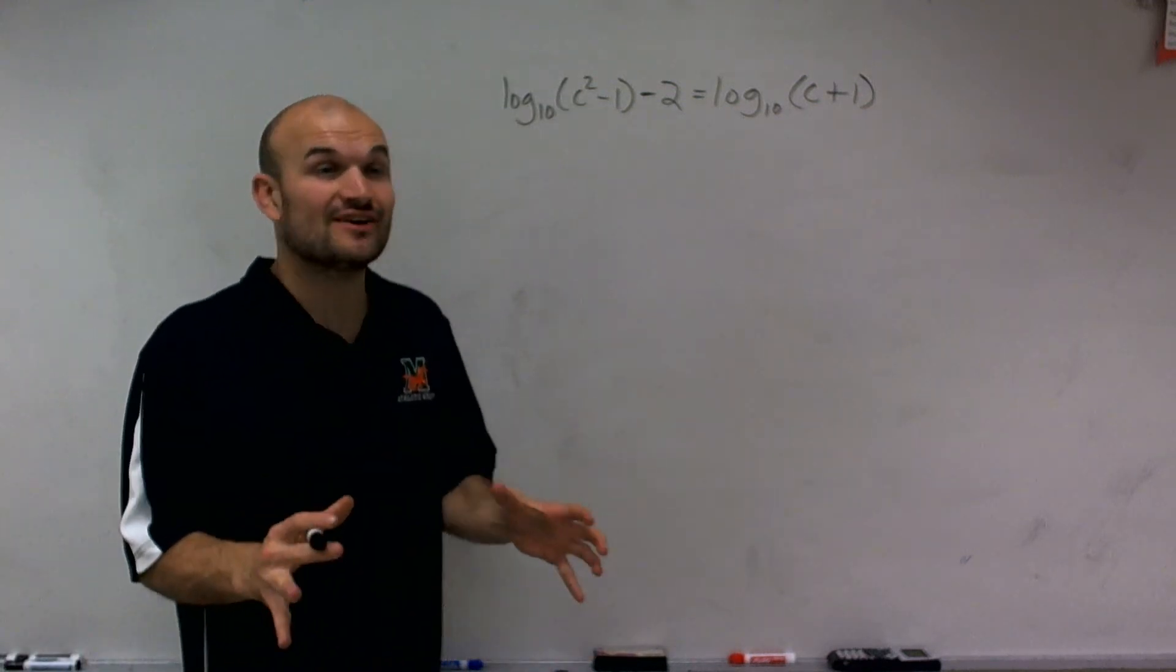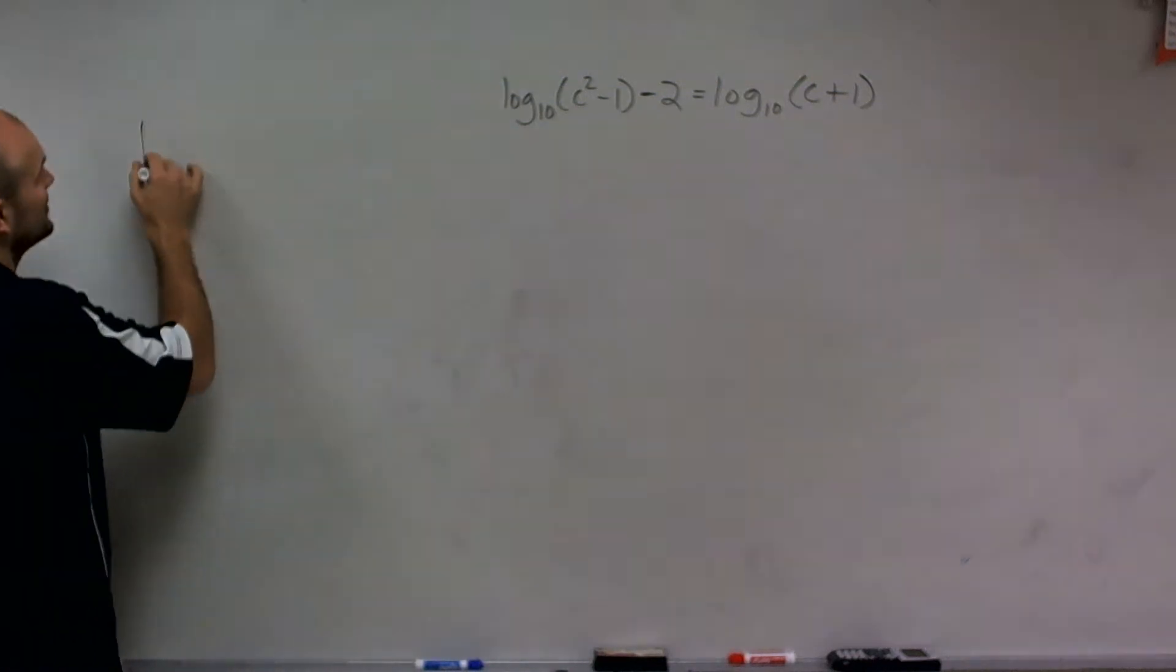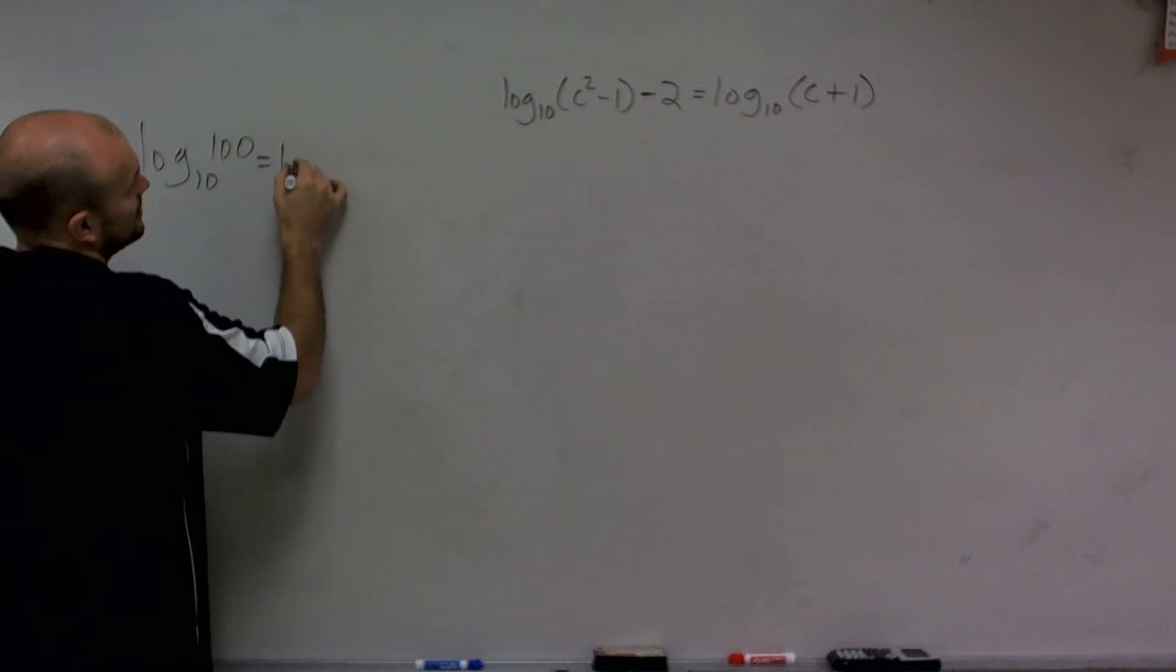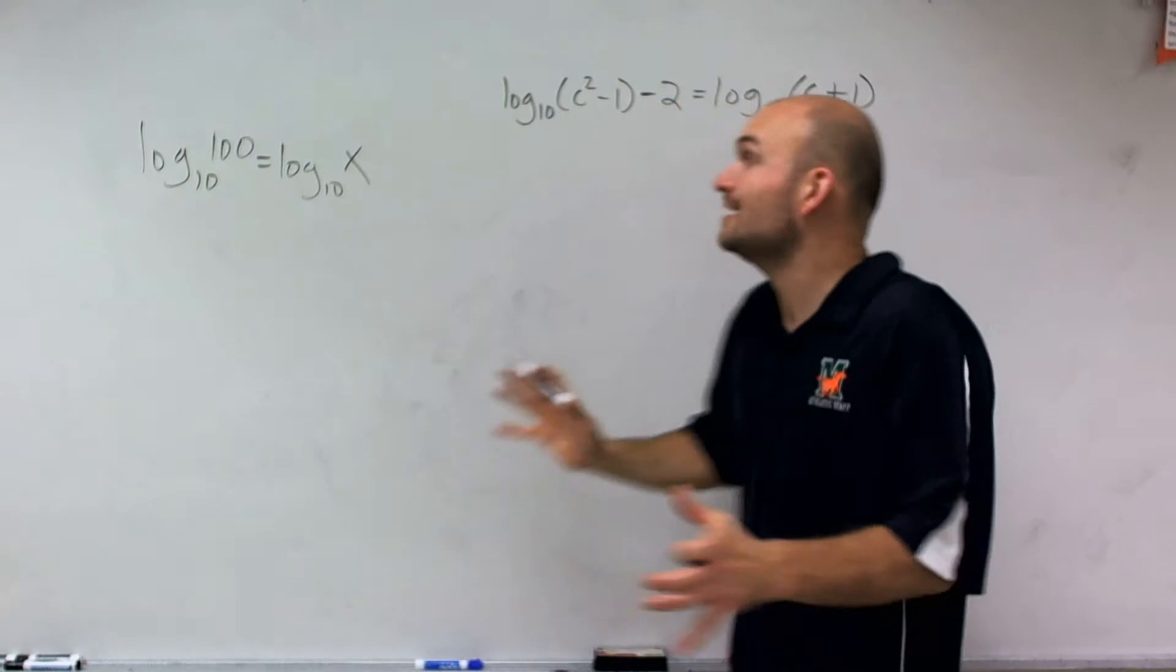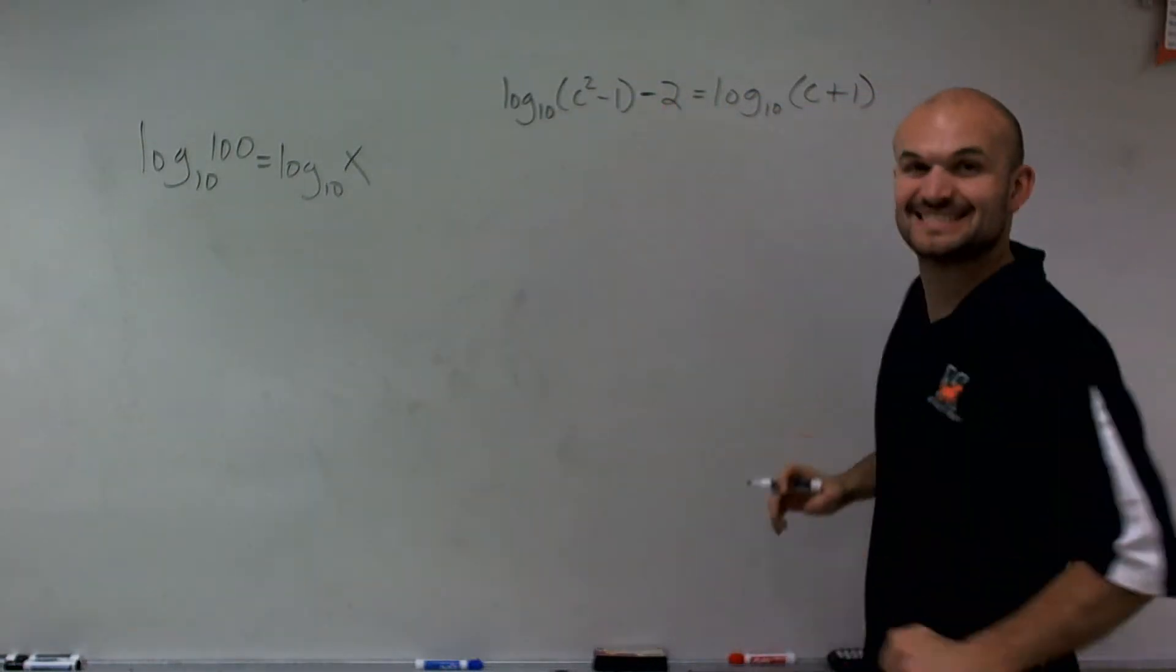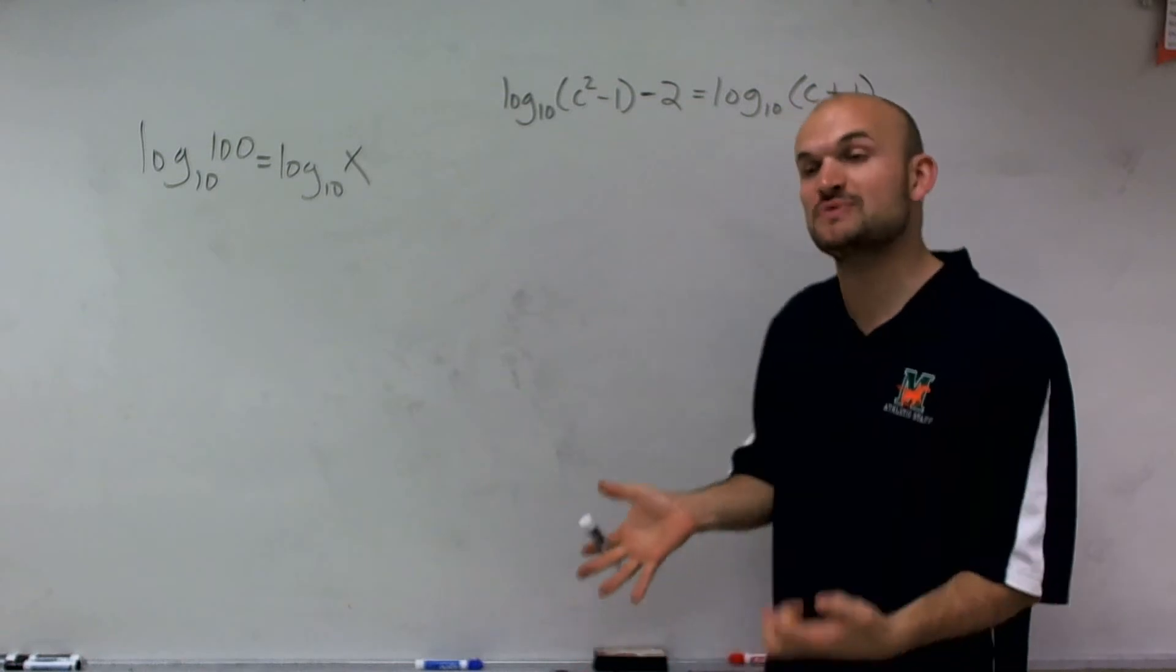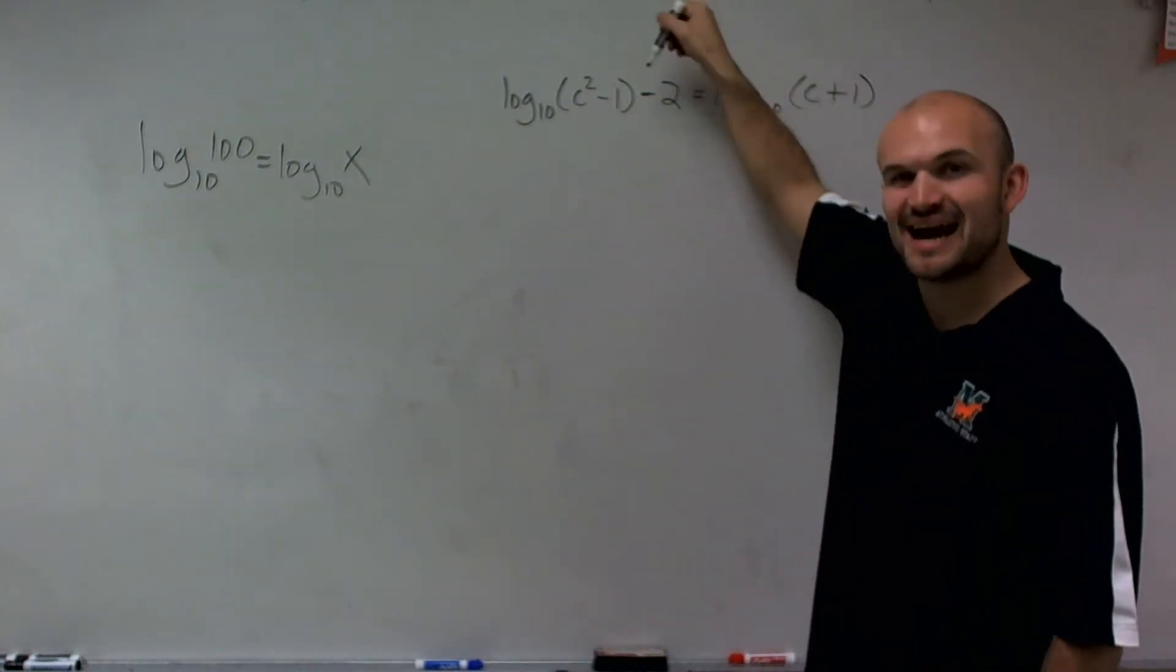This problem looks very similar to one with the equality of logarithms, where if we said log base 10 of 100 equals log base 10 of x, then we could say the logarithms are equal to each other. So we're almost there, except we have this minus 2. So we can't apply the equality of logarithms because we don't have one logarithm equal to another logarithm. We have this minus 2 here.